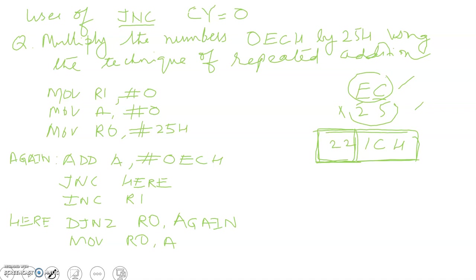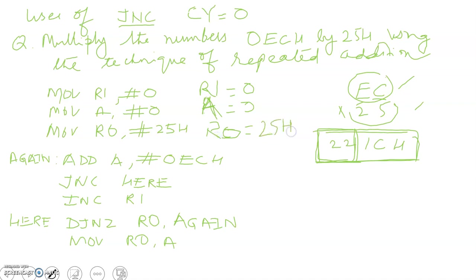The first step is MOV R1, #0 — we are storing 0 in R1. Then MOV A, #0 — we are moving 0 to the accumulator. Then MOV R0, #25H — R0 is having the value 25H. R0 is basically the count; 25 is the count, so R0 is acting as a counter.